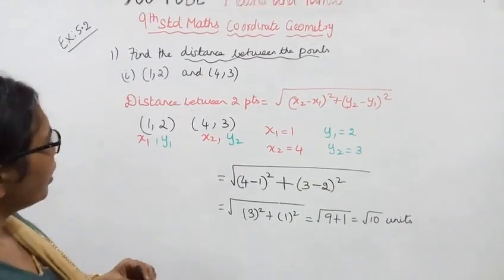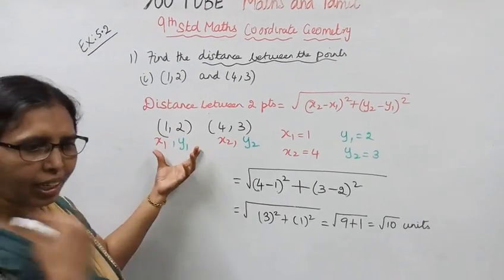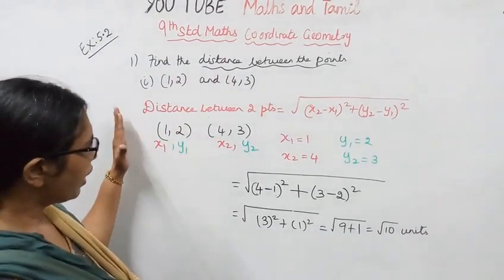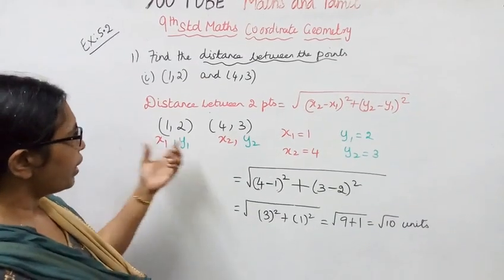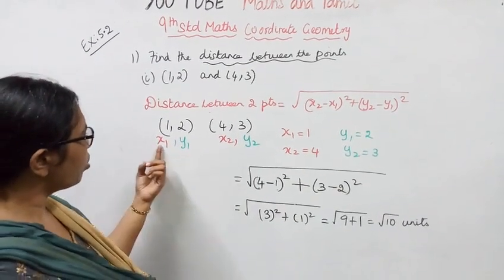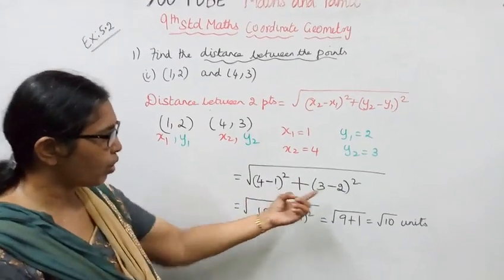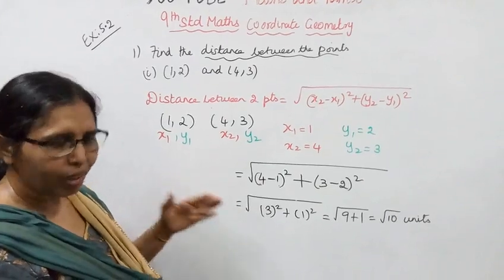This is a 2 marks question for distance between two points. The formula is (x2 minus x1) the whole square, which is (4 minus 1) the whole square, plus (y2 minus y1) the whole square.